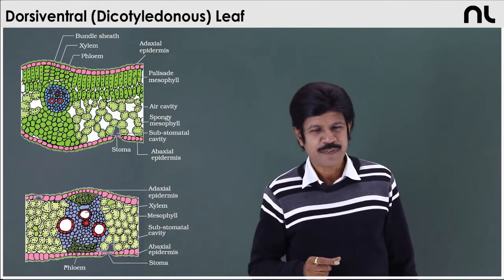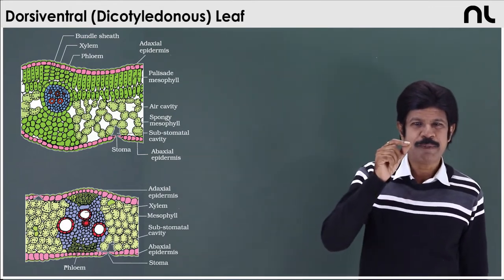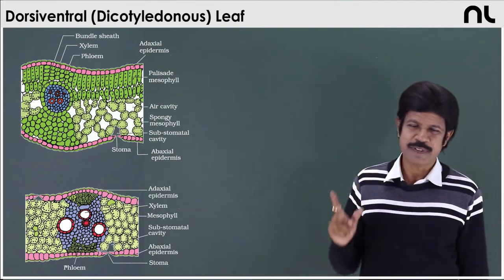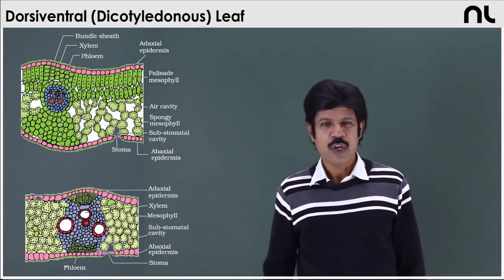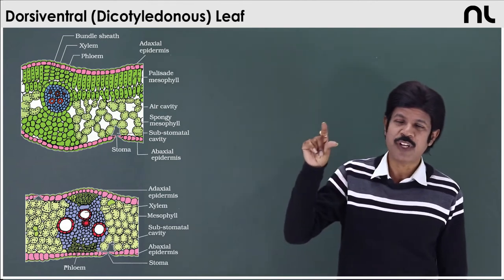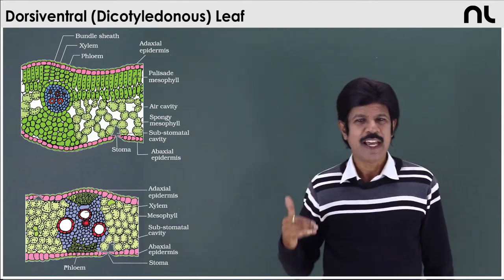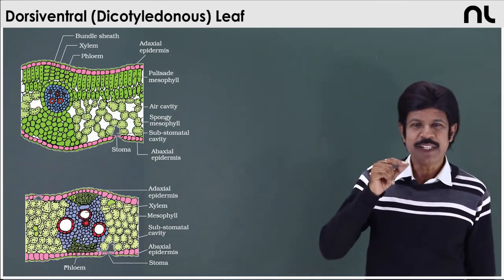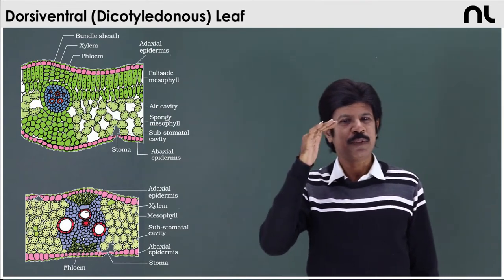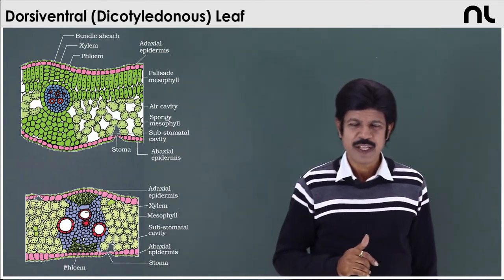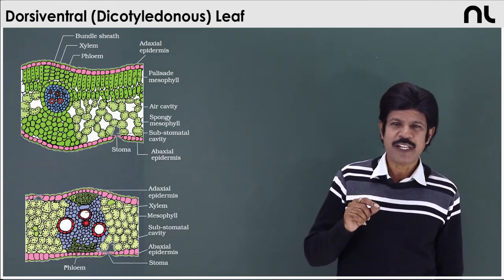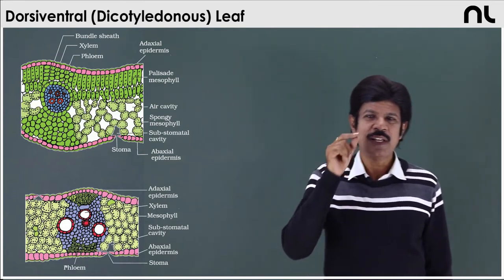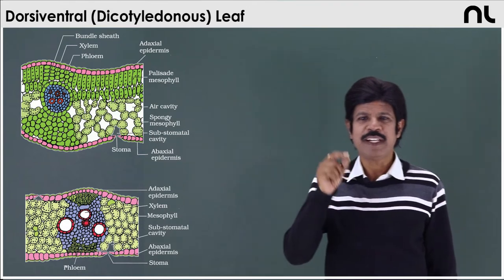In the case of the dicot leaf, the upper epidermis and lower epidermis are single-layered, compactly arranged without intercellular spaces, with rectangular cells. The walls are cutinized and form a layer called the cuticle. Both adaxial and abaxial epidermis have unicellular or multicellular trichomes. In the lower epidermis, stomata open into the wider intercellular space of the spongy tissue — what we call the substomatal cavity or substomatal chamber.